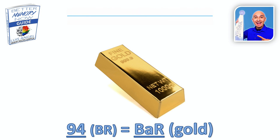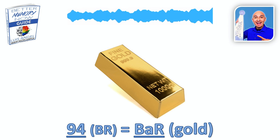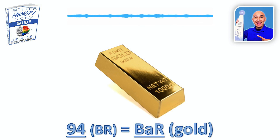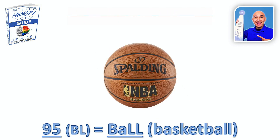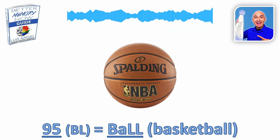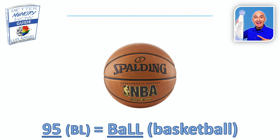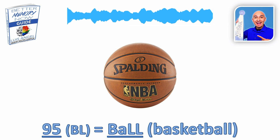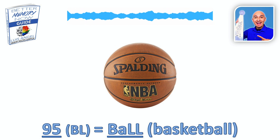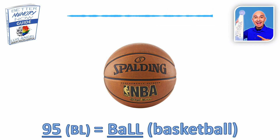94: B and R. I like to picture a bar for that — normally a gold bar for 94. 94 is bar. 95: I like to picture a ball for 95. B and L — ball. It's usually a basketball for 95. 95 is basketball.